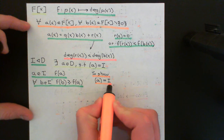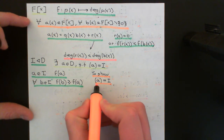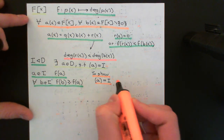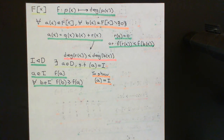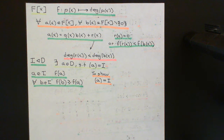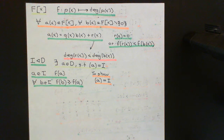Firstly, I want to show that all of the principal ideal generated by A must be contained within the ideal capital I. Then I want to show that there can't be any other element outside of the principal ideal generated by A which is in this ideal capital I. We will show that by proof by contradiction — if such an element existed, it would contradict the statement that F of A is the smallest value in the ideal capital I.